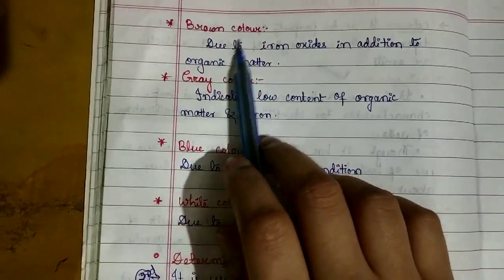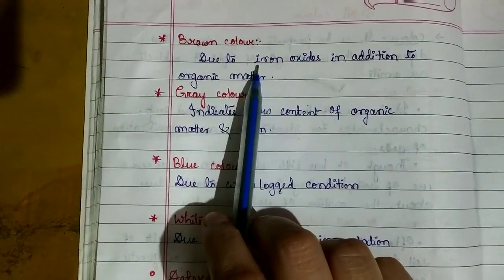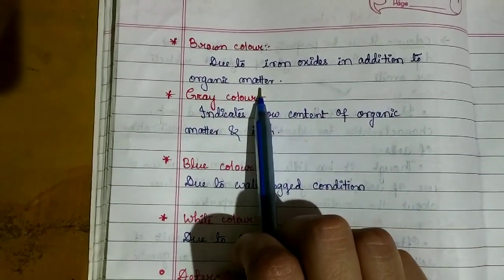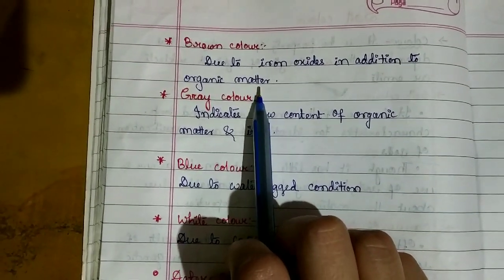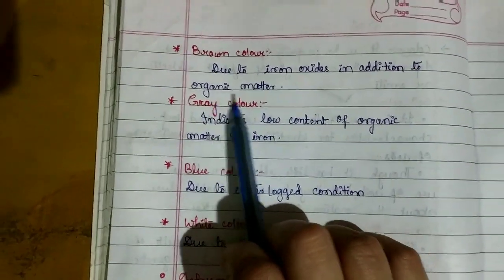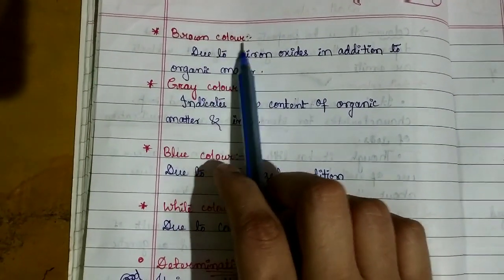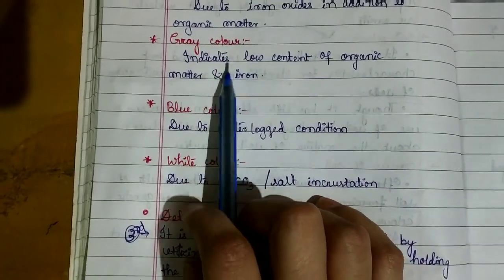Brown color is mainly because of iron oxides in addition to organic matter. If a soil is brown color, it means there is iron oxide and also some organic matter, which gives the soil brown color.